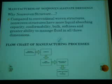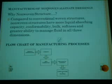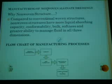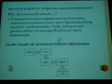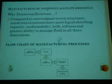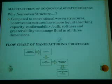Basically the alginate dressing is made in the form of a nonwoven. Nonwoven structures have more liquid absorbing capability, bulk softness, and greater ability to manage fluid in all three dimensions. Therefore nonwoven structures for making wound dressings are usually preferred in the modern era.